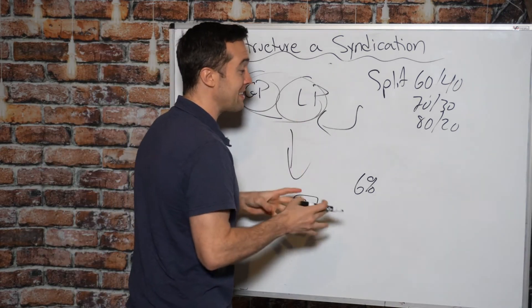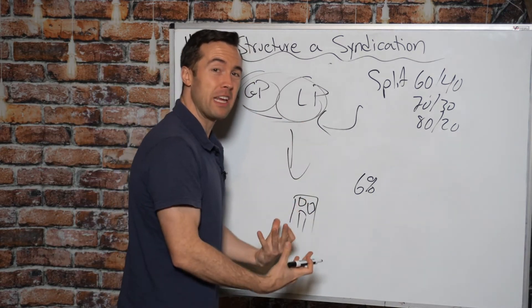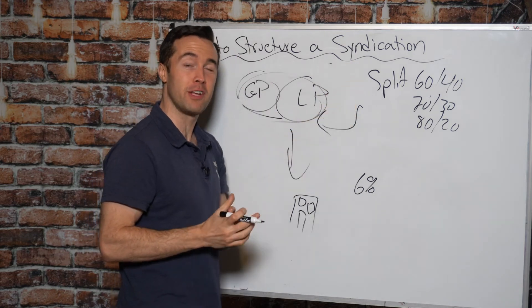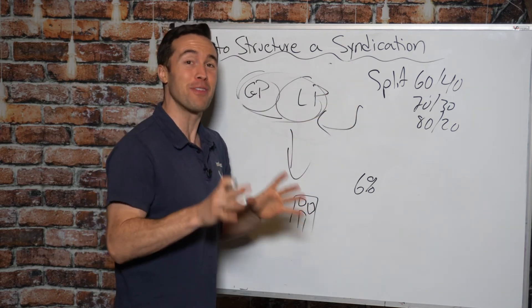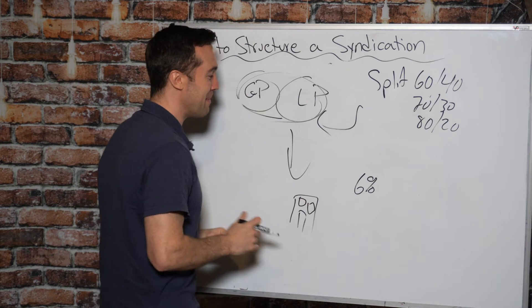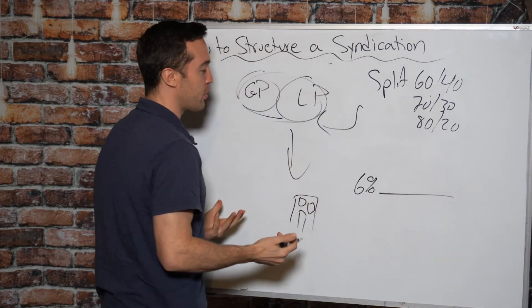depending on the sponsor, the general partner. It can be a whole lot of different things. So what a preferred return means is you're really giving preferred equity to the limited partnership. I'll put a link right up here to a video I did explaining all about the capital stock, which is where this ties in.